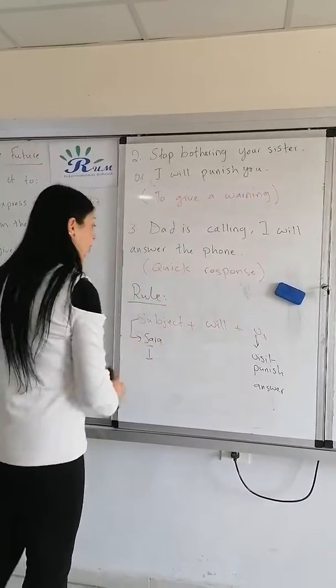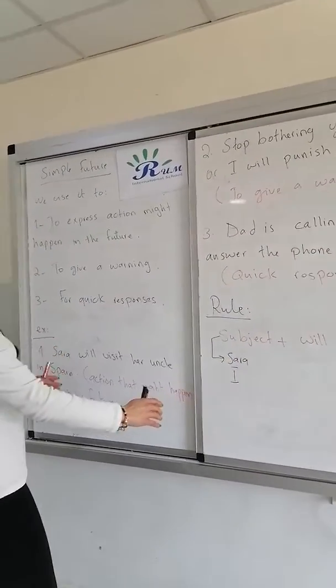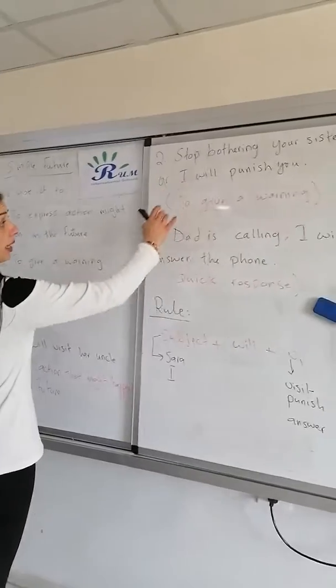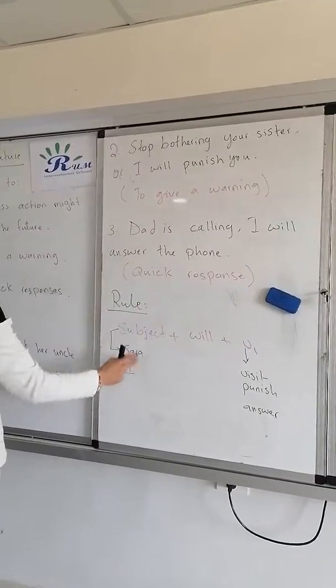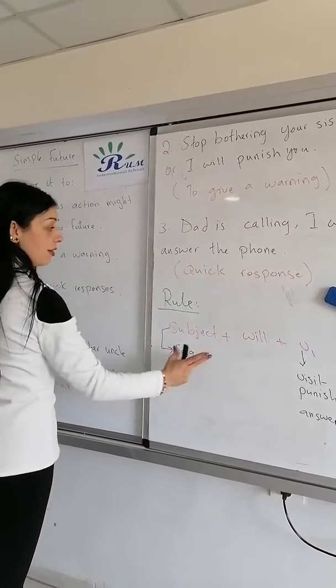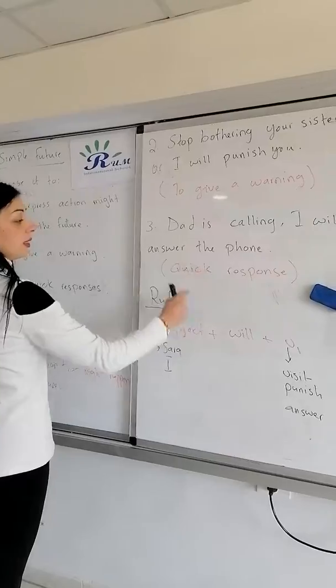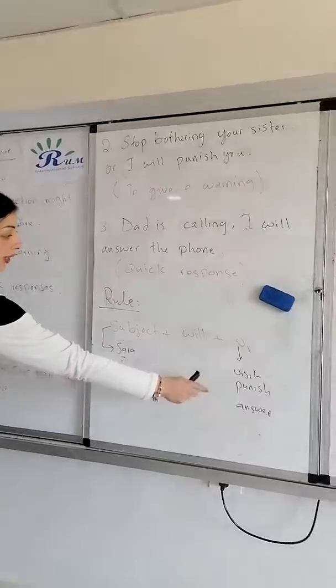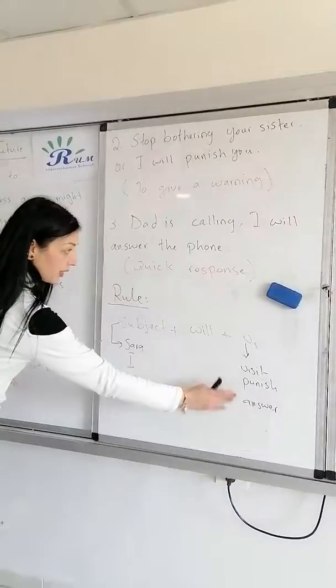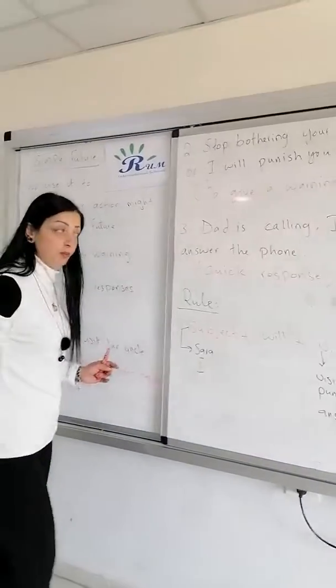How is it here? The subjects of my sentences are 'Sarah,' 'I,' and 'I.' Then we add 'will,' and then verb one: 'visit,' 'punish,' and 'answer.'